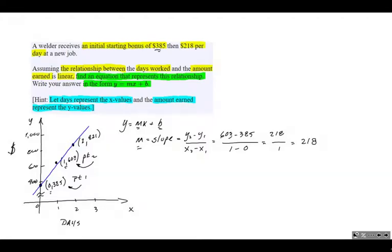Our b value in this equation, recall, is our y-intercept. And our y-intercept, of course, is the y value where the line crosses the y-axis. It's where the x value is 0, and that's this point right here. And the y value at that point is just our 385. That's our starting bonus on day 0. We earned 385. And so now we have the two values that we